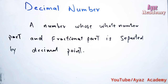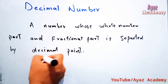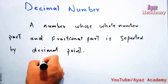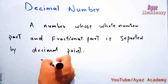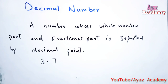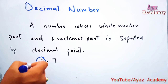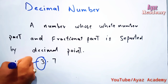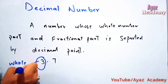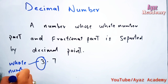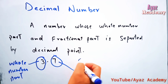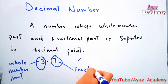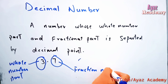This is the definition of decimal number. For example, suppose we have the number 3.7. This part is called the whole number part, and this part is called the fractional number part.